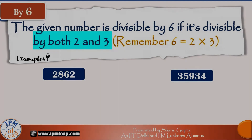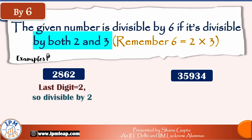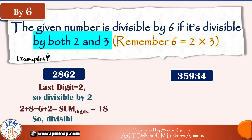The divisibility rule for 6: since 6 is a composite number equal to 2 × 3, a number is divisible by 6 if it is divisible by both 2 and 3. For 2862: last digit is 2 so it's divisible by 2; sum of digits is 2 + 8 + 6 + 2 = 18, which is divisible by 3. Since 2862 is divisible by both 2 and 3, it is also divisible by 6.